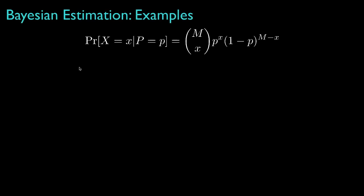Let's start with an example where the observation is a binomial random variable with capital M trials and a success probability equal to P. That is, the observation X is the number of successes in M independent trials, each with a success probability equal to P. The observation will be an integer in the interval from 0 to M.